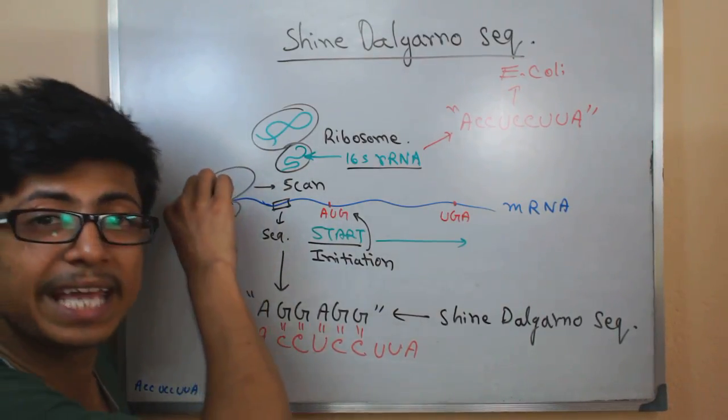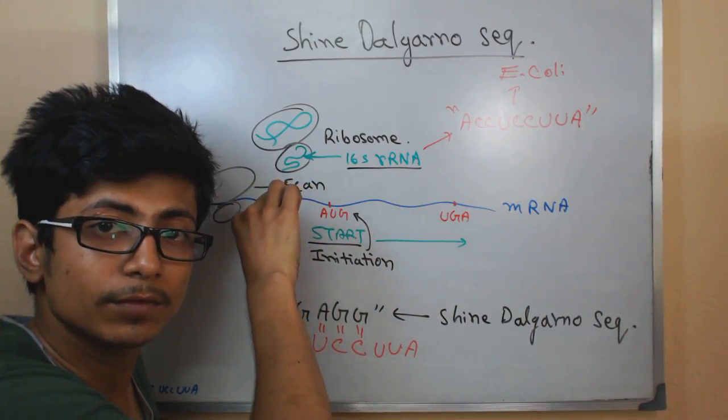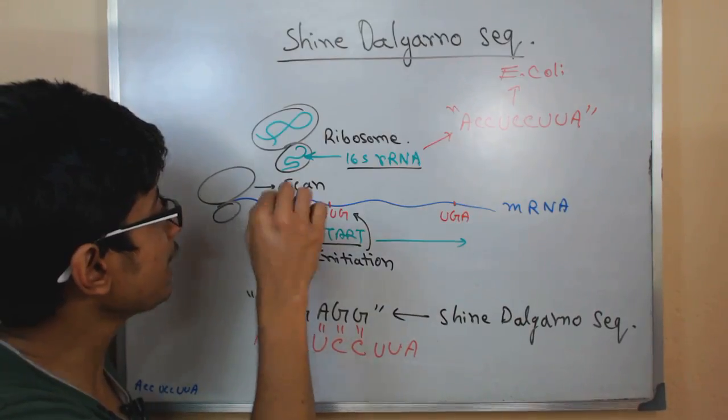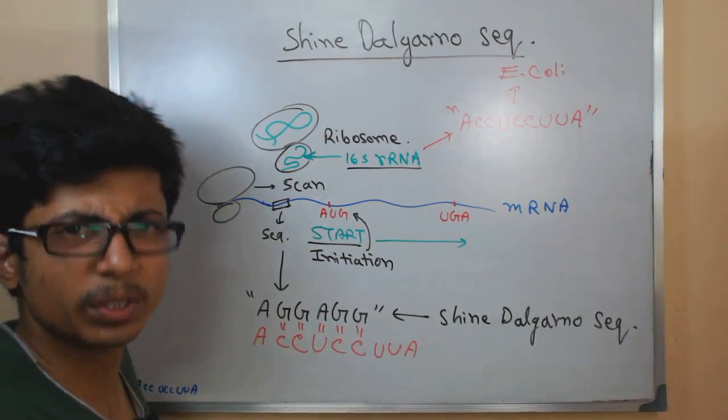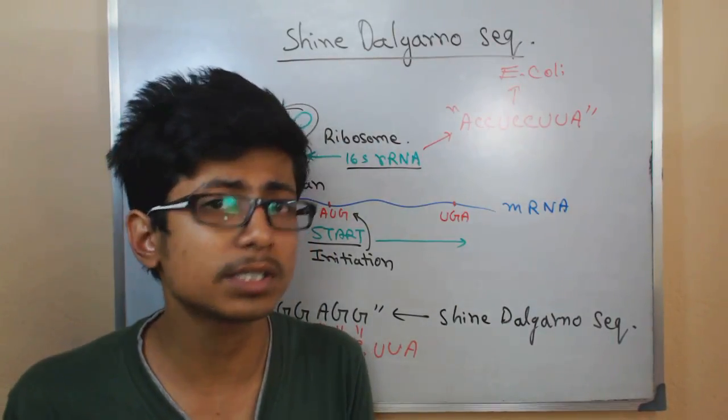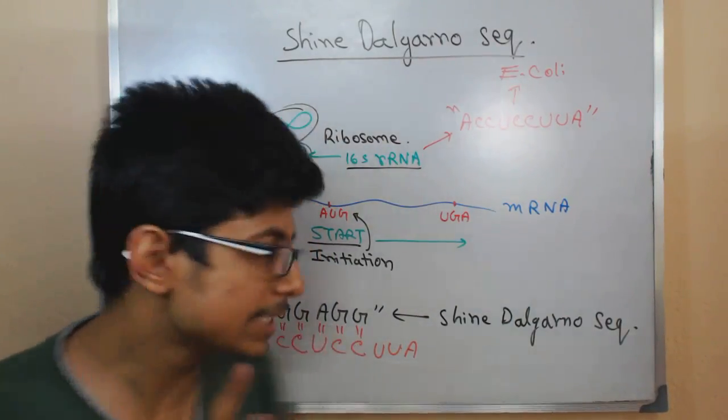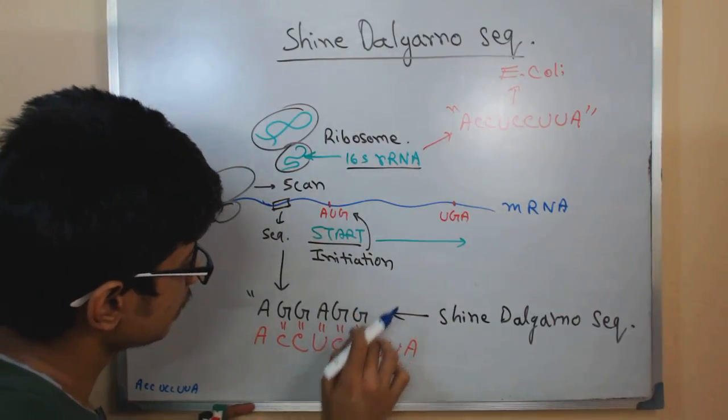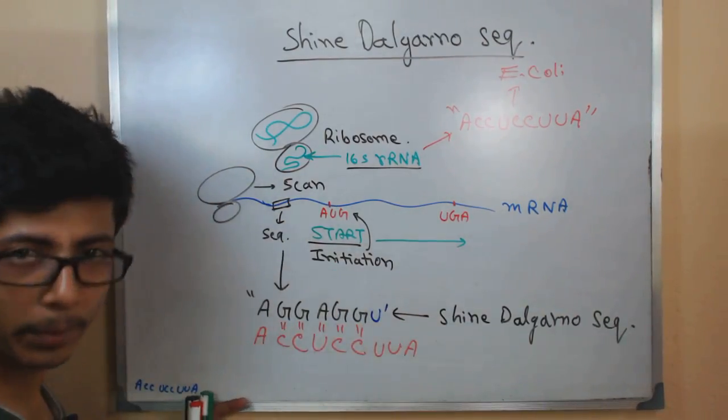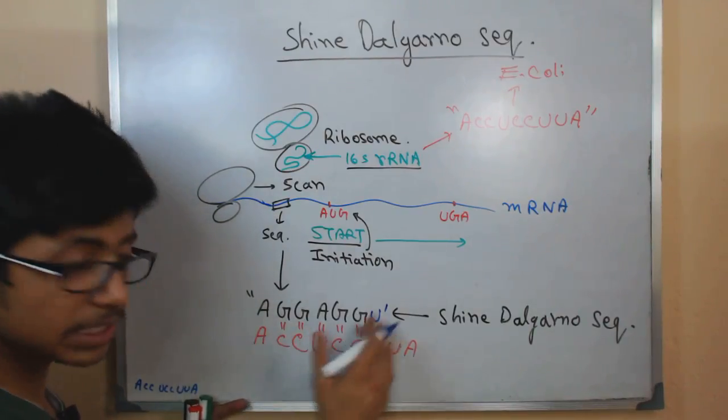For that, this ribosome scans through this mRNA from 5 prime to 3 prime direction for scanning this exact Shine-Dalgarno sequence. Now it might not contain the exact Shine-Dalgarno consensus sequence in the organism. For example, in E. coli it contains AGGAGGU, this particular sequence in E. coli, AGGAGGU.